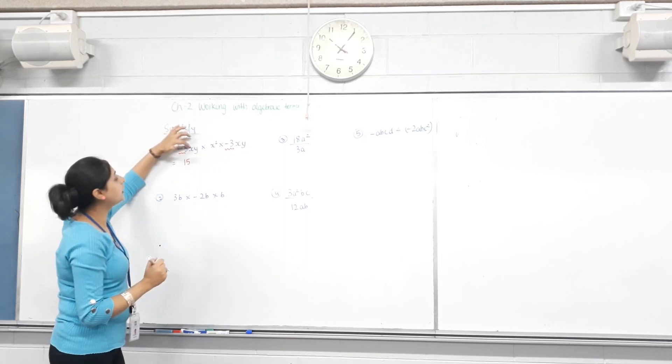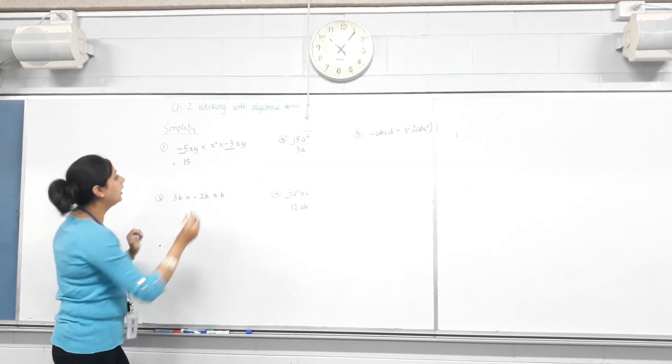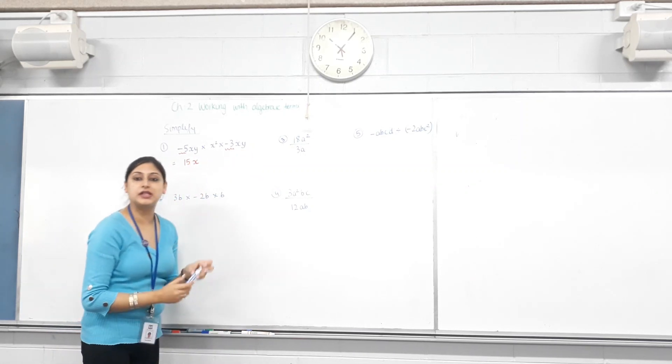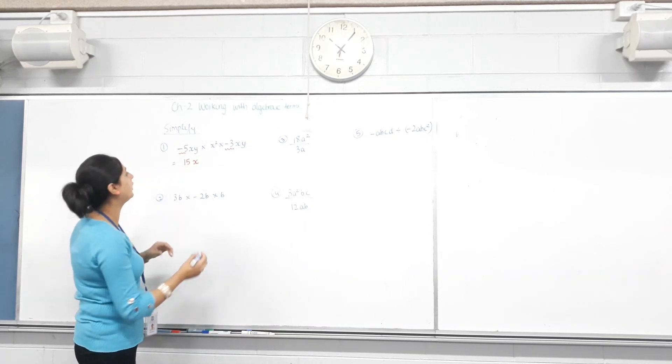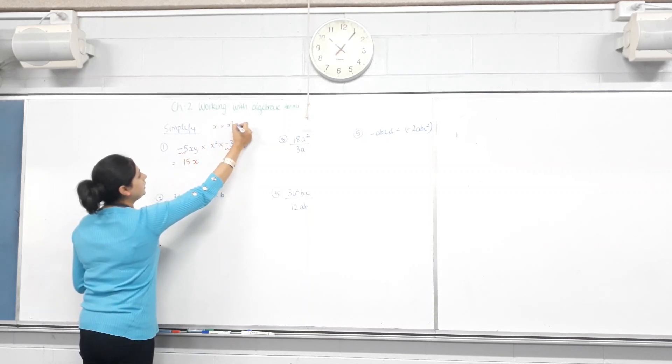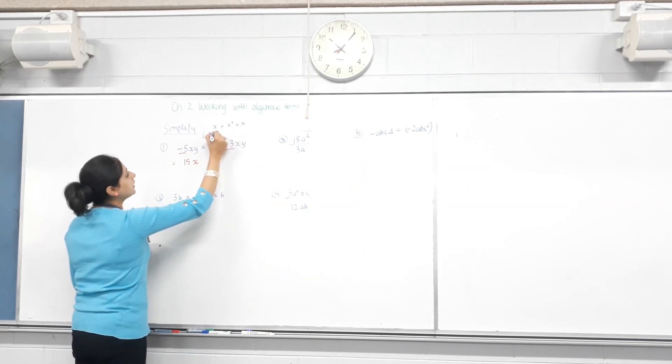Now, we have how many different letters? X and Y. When we times pronumerals, the powers get added. You have done this in index laws last year, but I'll give you a quick recap. Basically, I have X times X squared times another X. If I'm going to expand it, can X squared be written as X times X? Yes.